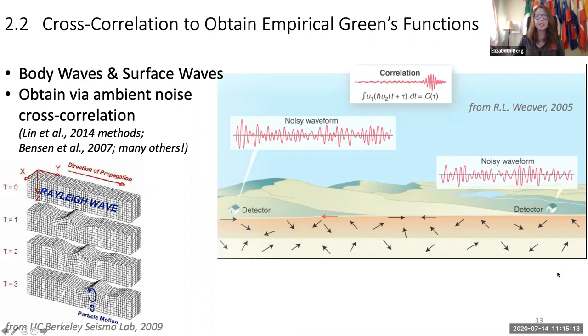Cross correlation could also be used to obtain empirical greens functions. Typically, we can use this to obtain body waves - Mori Nikata has several papers on this - and surface waves, which Fanchi Lin and a lot of people have papers using surface waves also. We can obtain this using ambient noise cross correlation. There are lots of papers detailing how to go about processing to do this. We'll do some processing in our Jupyter notebooks today. You can review Lin et al. 2014 and then Benson et al. 2007.